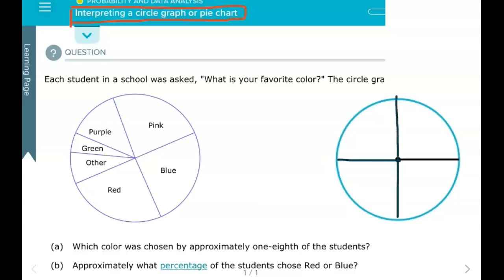And so if we want to make one-eighth, we're going to cut these fourths in half. And so each one of these is about one-eighth. Each one of these regions is about one-eighth.